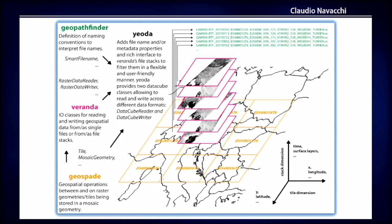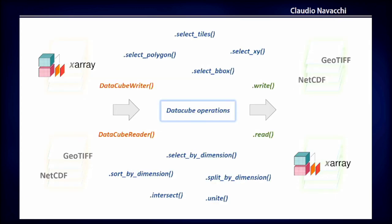And finally, on top, we have YODA, which adds some dimensional context by interpreting file names with the help of GeoPathfinder or by extracting metadata information from the files. With this setup, YODA accepts either datasets or files as input to initialize its data cube classes. Those data cube classes can then be used to spatially filter the data or to filter the data by the predefined dimensions, and in the end you can write or read the data to different data formats.